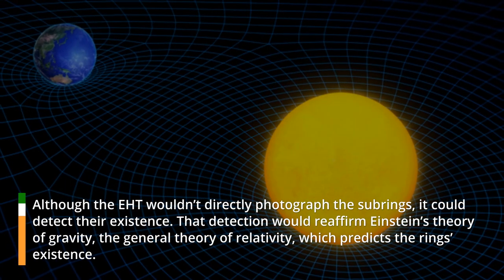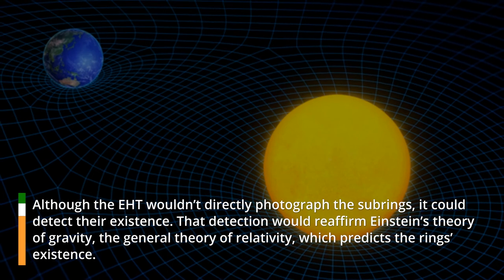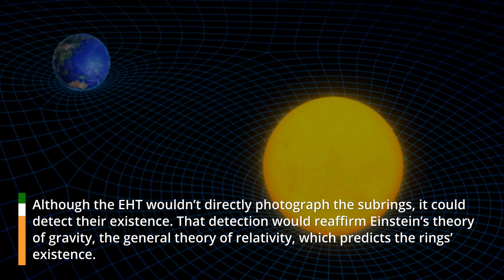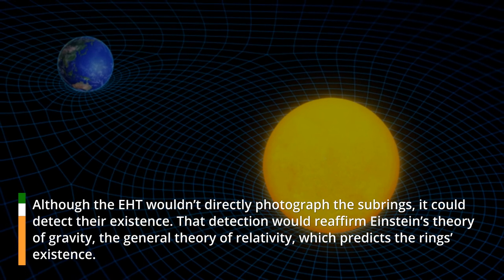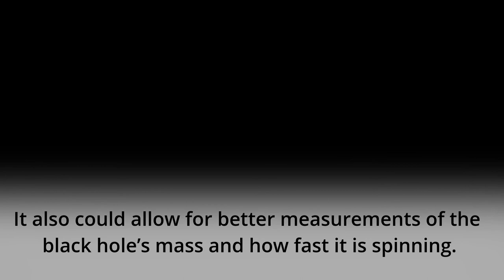Although the EHT wouldn't directly photograph the subrings, it could detect their existence. That detection would reaffirm Einstein's theory of gravity, the general theory of relativity, which predicts the ring's existence. It also could allow for better measurements of the black hole's mass and how fast it is spinning.